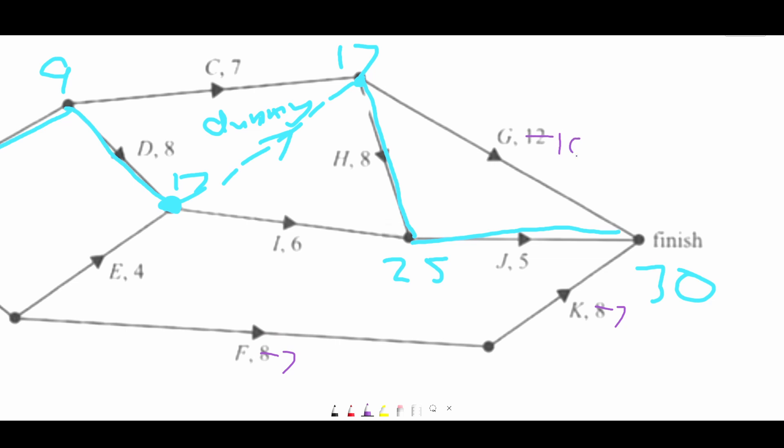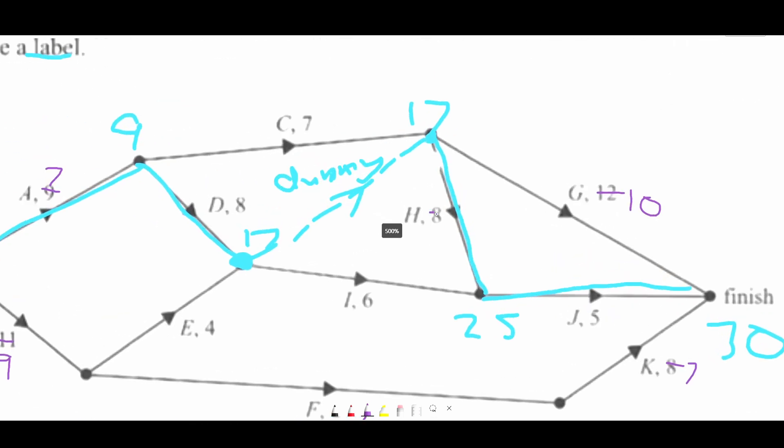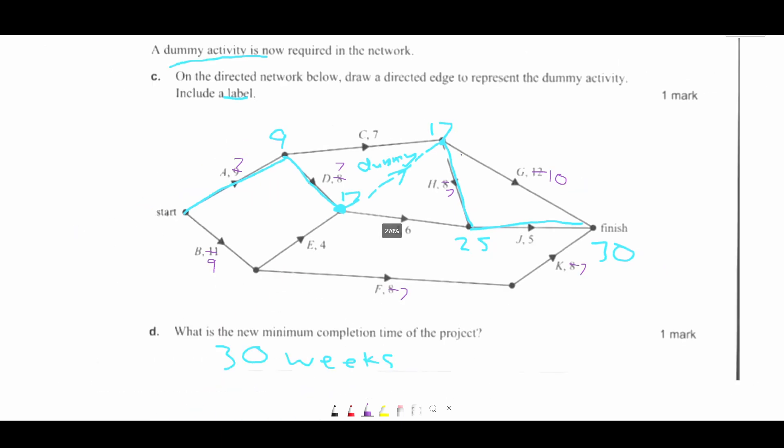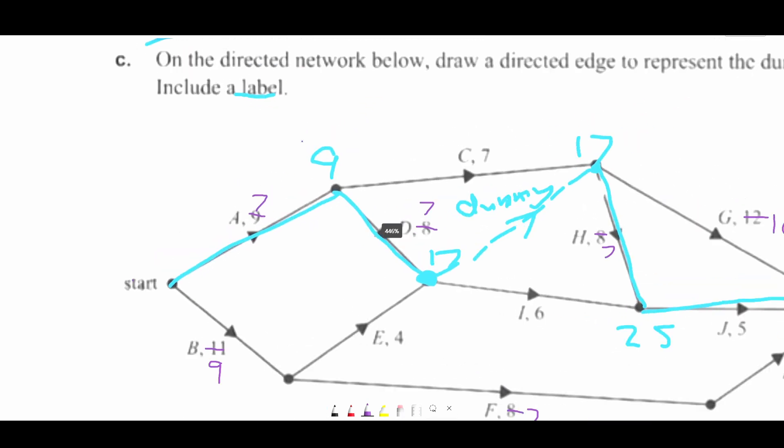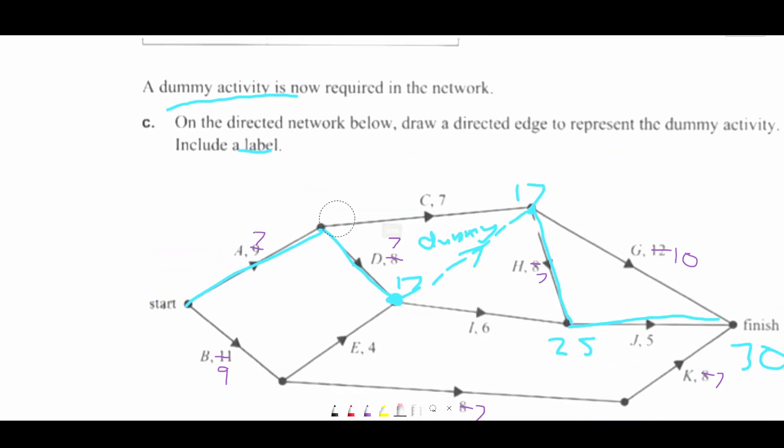This one, 10. This one, seven. Seven. This one stays the same. This one, seven. Now, we've got to recheck our critical path. So, doing the critical path again. I'll just rub out everything except for the dummy activity. Therefore, our new critical path.